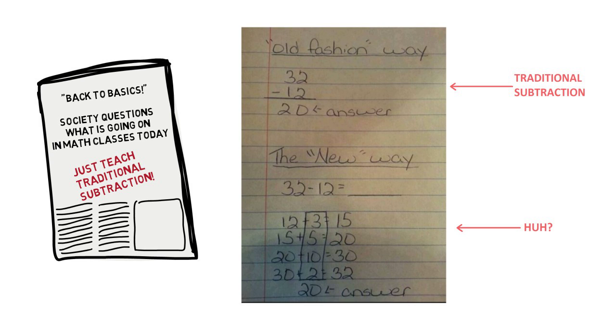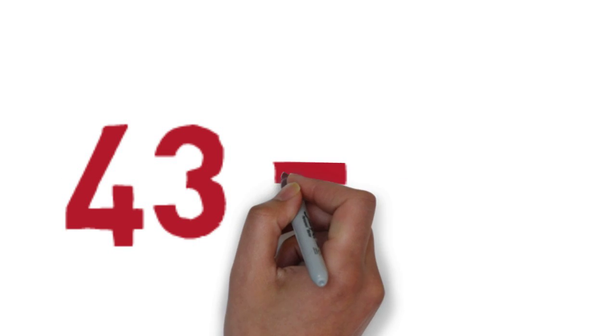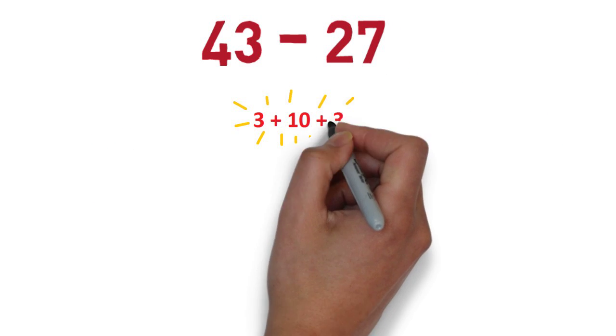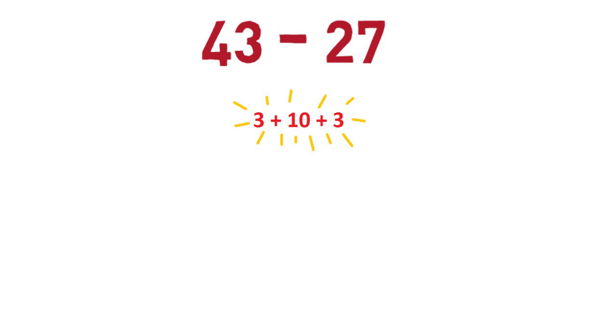But let me work some numbers with a bit more meat to them. Let's do, say, 43 take away 27. Here's how my brain works. When I look at 43 take away 27, I think 3 and 10 and 3 to get the answer 16.